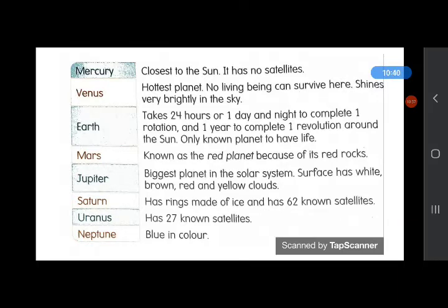Let's discuss all the planets and their features. First is Mercury—closest to the sun and it has no satellites. Next is Venus—the hottest planet. No living being can survive here, and it shines very brightly in the sky. Though Mercury is closest to the sun, Venus is the hottest planet. Next is Earth. Earth takes 24 hours or one day and night to complete one rotation, and one year to complete one revolution. Rotation causes day and night. Revolution causes seasons. The Earth is the only known planet to have life.